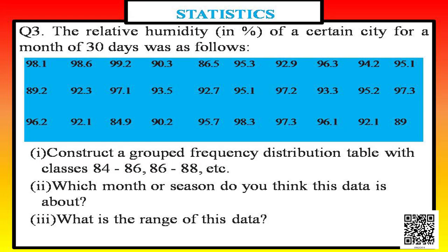Question 3: the relative humidity in percentage of a certain city for 30 days is given, with values like 98.1, 98.6, 99.2, and so on. Part (a) asks to construct a grouped frequency distribution table with classes 84–86, 86–88, etc. Part (b) asks which month or season this data is about, and part (c) asks what the range of the data is.